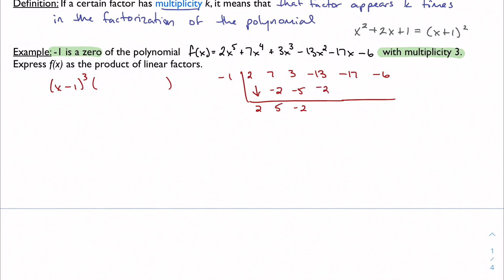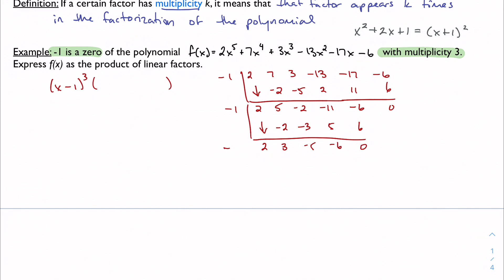Performing synthetic division three times using −1. First pass gives me coefficients: positive 2, −11, +11, −6, remainder 0. Second pass: −3, −5, +5, −6, +6, remainder 0. Third pass: −2, +1, −1, −6, +6, remainder 0. We've confirmed the factor works three times, and I'm left with the quotient 2x² + x − 6.